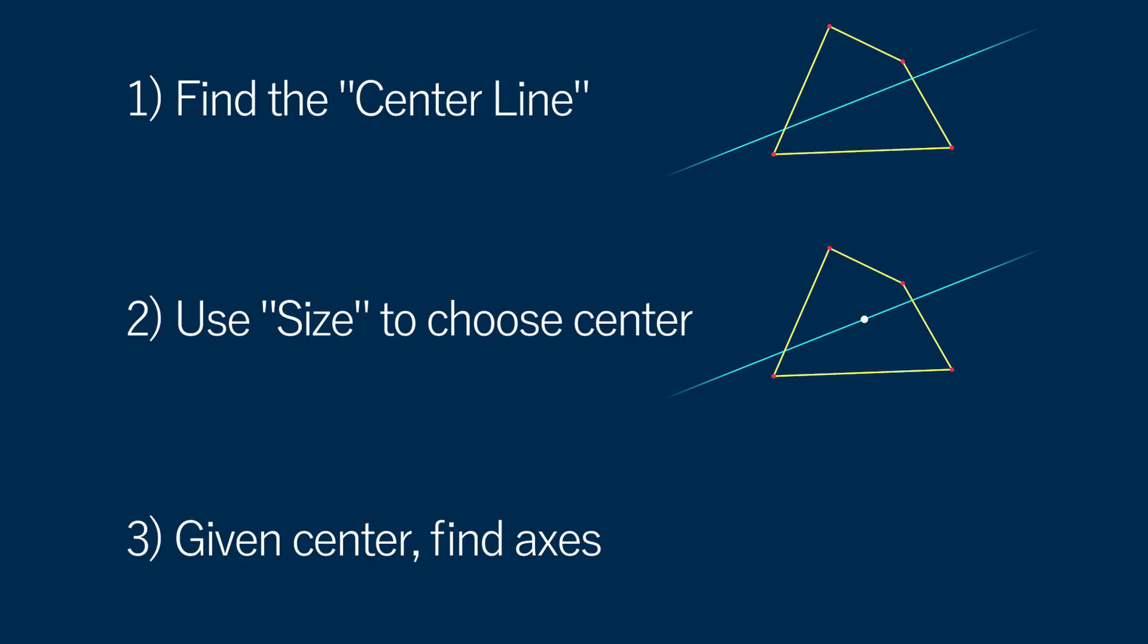First, find the center line, which I've already shown how to do. Next, given a size, find where on the line the center of the ellipse should be. And finally, given that center, use the quadrilateral to find the axes of the ellipse. And then I'll have the complete solution. Let's start with that last one first.